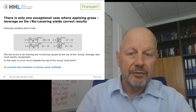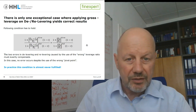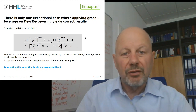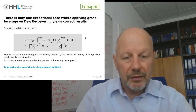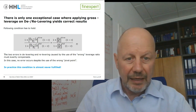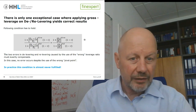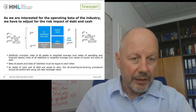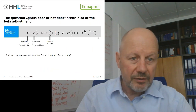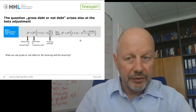This condition must hold for the two mistakes — using the wrong leverage for delevering and for relevering — to exactly offset each other. In practice, these conditions are rarely ever met. So the right answer is: use the net debt-to-equity ratio in this equation for delevering and relevering beta factors.